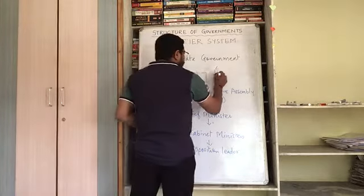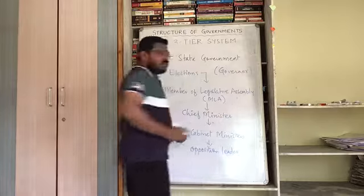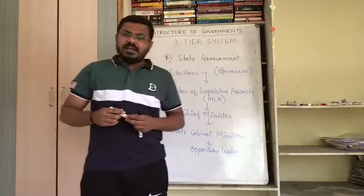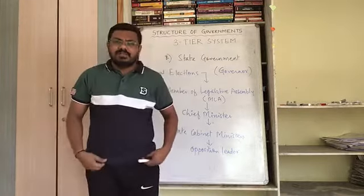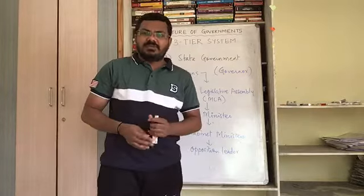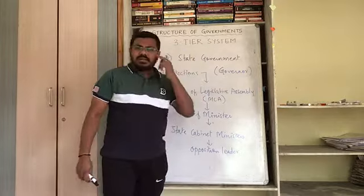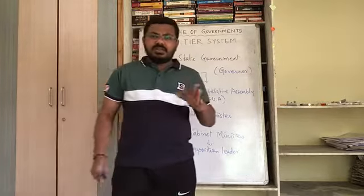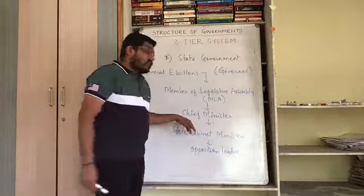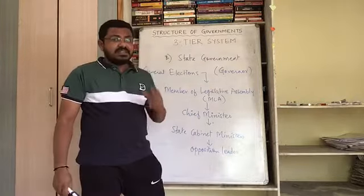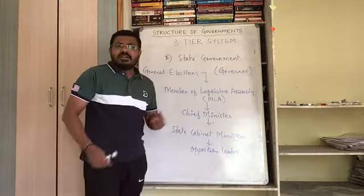In the state government, the most important role is played by the governor. Governors are appointed by the president on the advice of the prime minister or the council of ministers of the union government. The governor is appointed to look after the functioning of the state. The elected chief minister is the head of the state government.